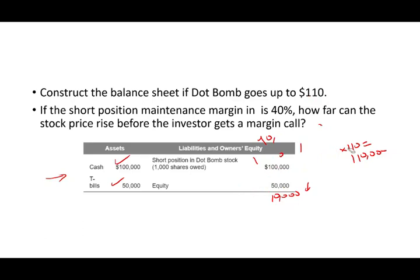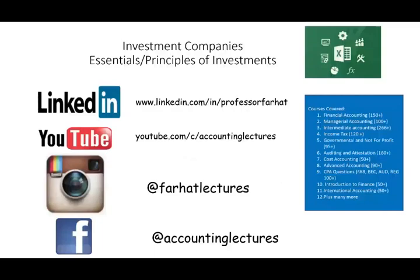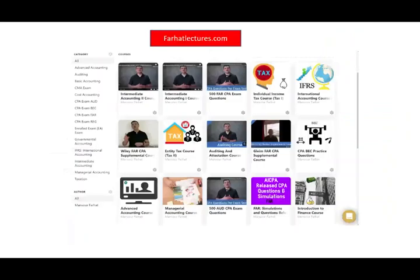If the short position maintenance margin is 40%, you can compute how far the stock can rise before a margin call — approximately $107 and some change. As always, please like, share, and put this recording in a playlist. In the next session we'll look at investment companies. Visit farhatlectures.com for your accounting, finance, or professional certification studies. Good luck, study hard, and stay safe.